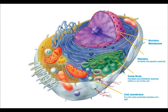Next comes the nucleus. It is the main control center of the cell. It contains all the genetic material of an organism.